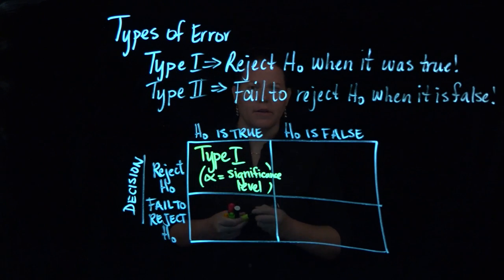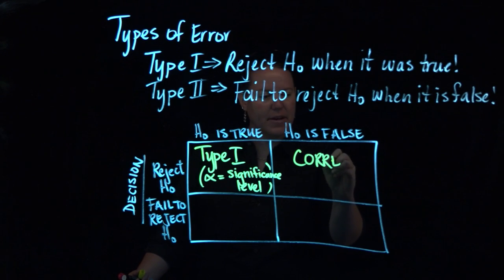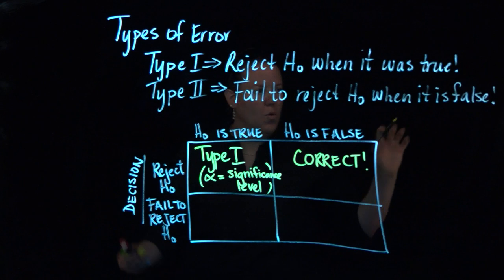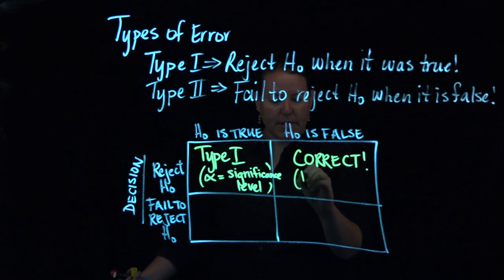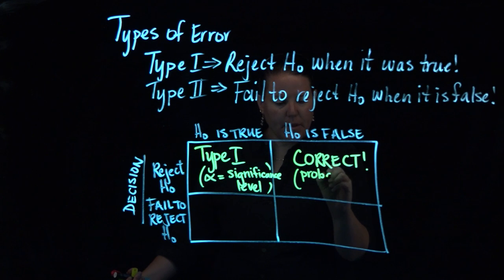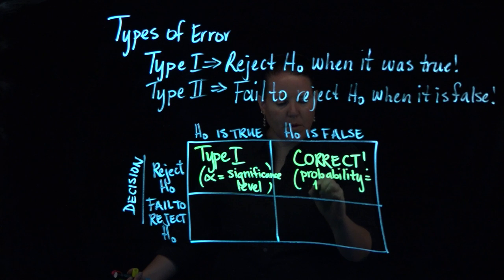If you reject the null and the null is false, then you did it right. That was correct. Love it when you're correct. And the probability of this occurring is equal to 1 minus alpha.